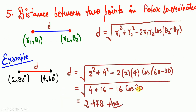Next, we find the distance between two points in the polar coordinate system. In polar coordinates, data is given as (r, θ). For a line with endpoints (r1, θ1) and (r2, θ2), the distance formula is: d equals the square root of r1² + r2² minus 2·r1·r2·cos(θ2 − θ1). This is a simple logical formula.